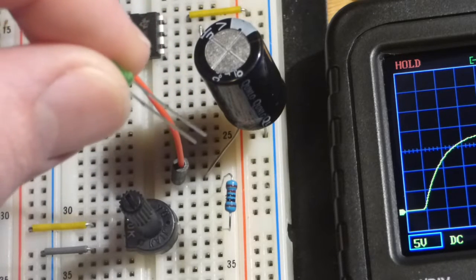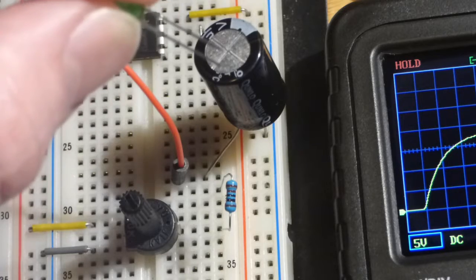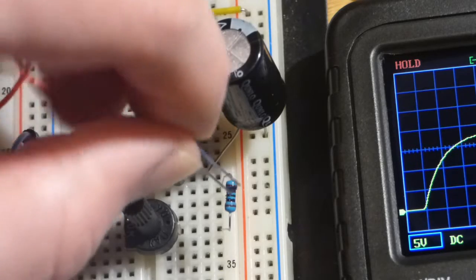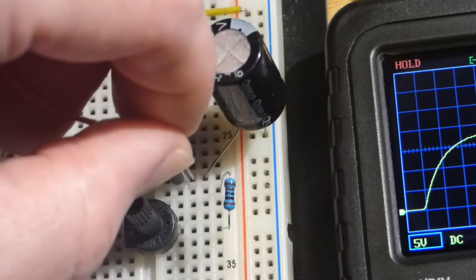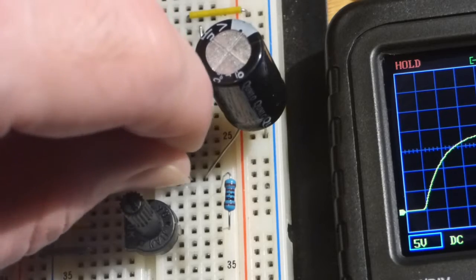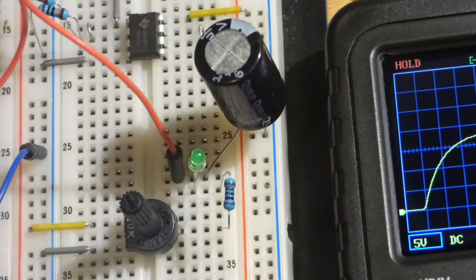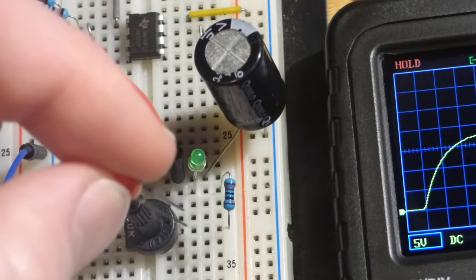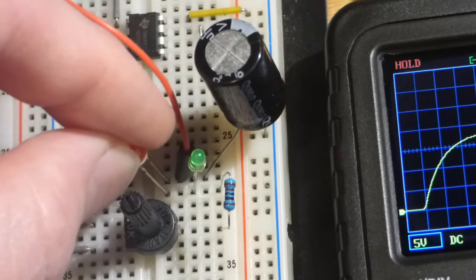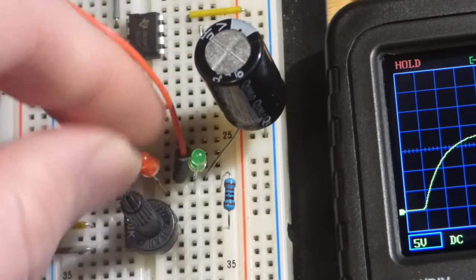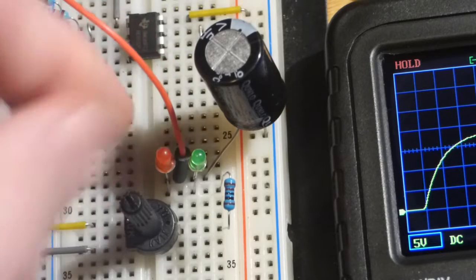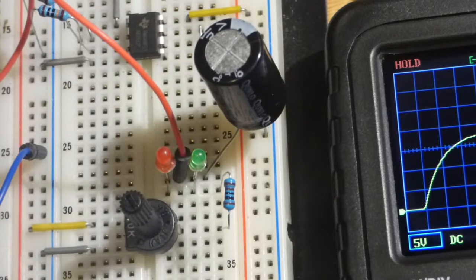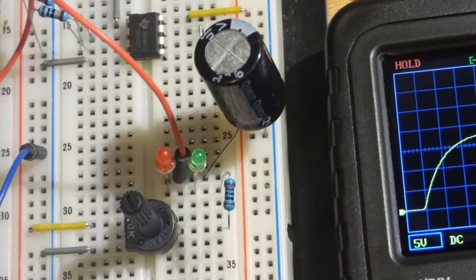Let's get a green LED so it conducts while the capacitor is discharging. We'll put the long lead (anode) to where the capacitor is and the cathode to where the resistor is connected. Then we'll grab a red LED and do the opposite - we want it to conduct while the capacitor is charging.